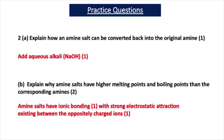Question 2A asks how an amine salt can be converted back into the original amine. This can be done by adding aqueous alkali such as NaOH — one mark. Question B asks why amine salts have higher melting points and boiling points than the corresponding amines. This is because amine salts have ionic bonding — one mark — and there is strong electrostatic attraction between the oppositely charged ions — one mark — which is stronger than the hydrogen bonding that exists between amine molecules.